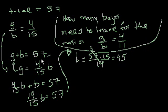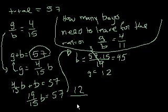And we know that there are a total of 57 kids in the class. g plus b is 57. So we know that there are 12 girls, right? 57 minus 45. Good. So now we know that the current boys and girls are 45 boys and 12 girls. So let's write that down. So there's 12 girls and 45 boys.